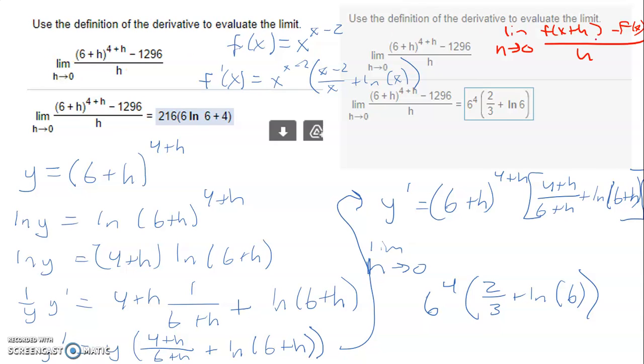Limit as h goes to 0, you've got h on the bottom. So that means that this is f of x, and this is f of x plus h. Now, if that's the case, since I have the plus h in the base and the exponent, that means my original f of x problem or equation would have had x in the base and the exponent.